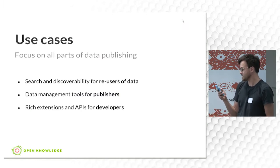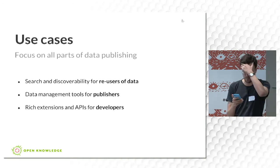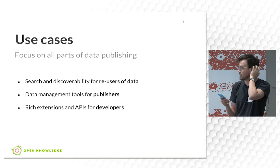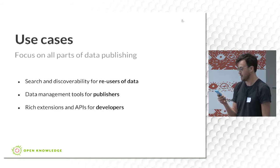CKAN has the objective of being useful at both ends of the data publishing process. On the one hand, making it easy for people to find data that's relevant and useful to them and access it for their own needs, and at the same time providing tools to make it easier for publishers to streamline data publishing and integrate it into their existing workflows.